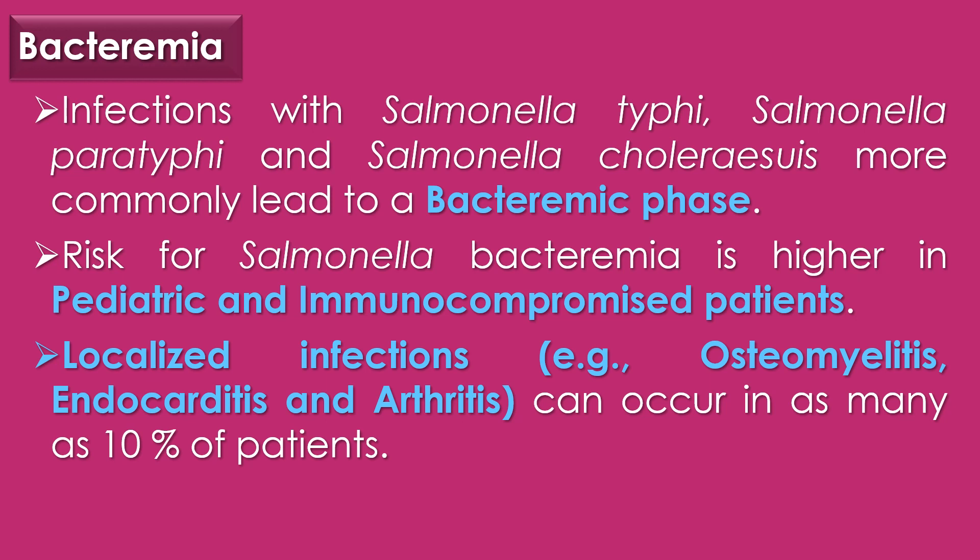The second clinical disease is bacteremia. All Salmonella species can cause bacteremia, although Salmonella typhi, Salmonella paratyphi, and Salmonella choleraesuis more commonly lead to the bacteremic phase. The risk is higher in pediatric and immunocompromised patients such as HIV and sickle cell patients. Clinical presentations are similar to other gram-negative bacteremias; however, localized infections like osteomyelitis, endocarditis, and arthritis can occur in as many as 10% of patients.